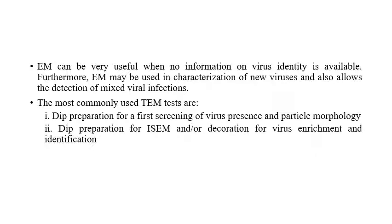Electron microscopy is very useful when no information is available on a particular virus. By using the electron microscope, we can obtain at least some information such as morphology and structure. It is also used for the characterization of new viruses and for the detection of mixed viral infections — for example, when a plant is infected by different types of viruses simultaneously.